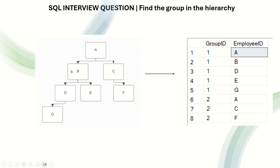Some members report to B and some to C. You need to group all employees so the employees under each entire tree are under one group. Employee A is group ID one, B is group ID one, D, E, and G are group ID one. A is also assigned group ID two because A is the super manager and falls under all groups. C is group ID two and F is group ID two.